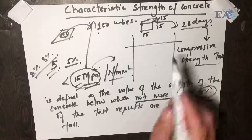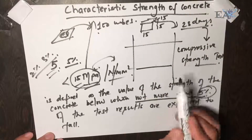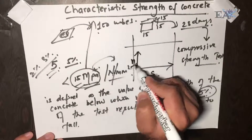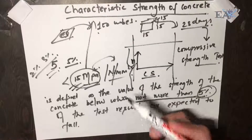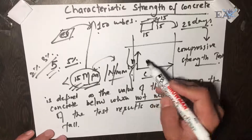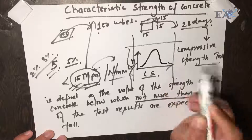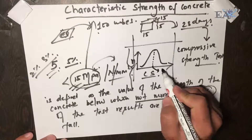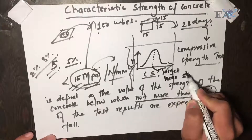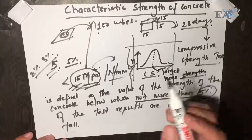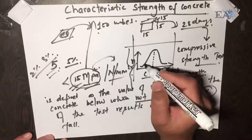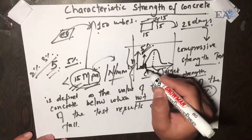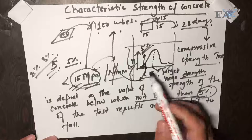If we plot a graph of all 100 test cubes, with compressive strength on the x-axis and frequency (number of cubes) on the y-axis, we get a bell-shaped curve. The middle value shown by the maximum number of cubes is known as the target mean strength. The characteristic strength, say 15 MPa, lies to the left, below which we have five percent of the results.